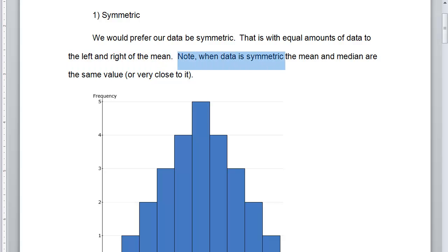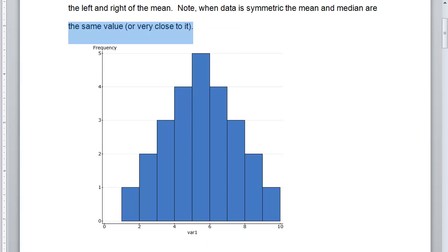Note that when data is symmetric, the mean and the median are the same value or very close to it. When we're dealing with real values, real data, they can be a little bit apart. And so what does that look like? It looks like this histogram right here.